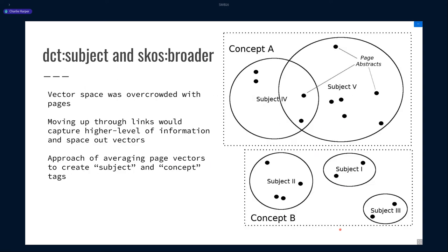Utilizing the linked nature of the data in DBpedia is what allowed us to do this. Within DBpedia, every page has a DCT subject tag, which links us higher, and anything linked through a DCT subject tag is then linked to an even broader category through SKOS broader. We arbitrarily called these lower ones 'subject' and the higher ones 'concept.' By averaging together all of the different page vectors within a subject, and then averaging together all of the different subject vectors to get up to a concept, we were able to try again at this higher level and see if we got better information.